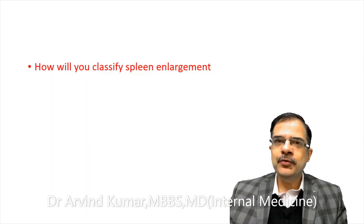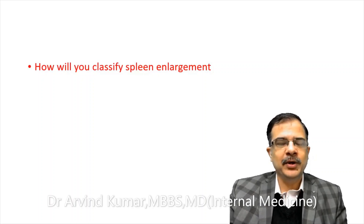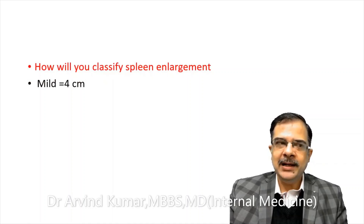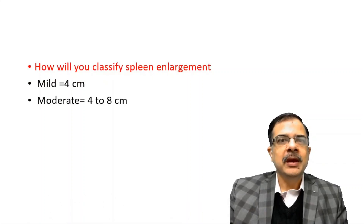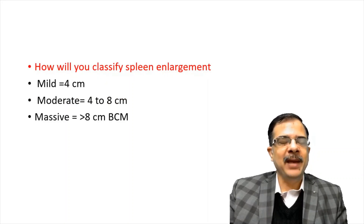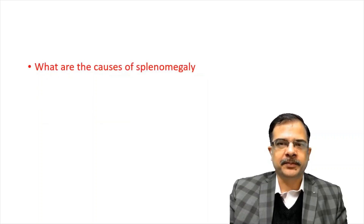How will you classify spleen enlargement depending on size below the costal margin? Mild splenomegaly is up to 4 centimeter below the costal margin; between 4 to 8 is moderate; and massive splenomegaly is more than 8 centimeter below the costal margin.